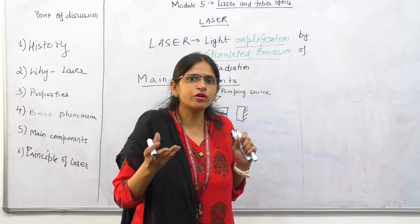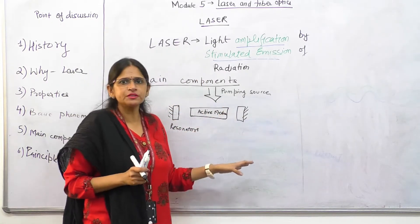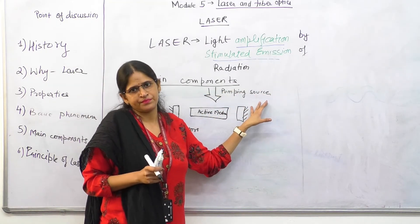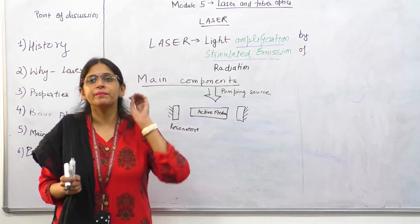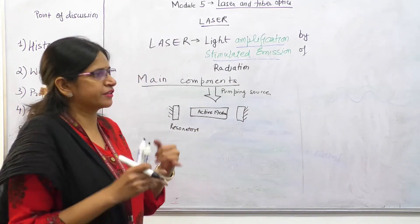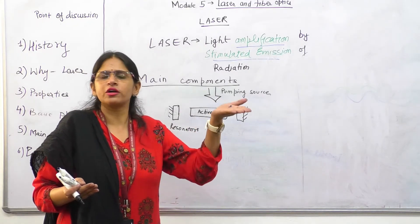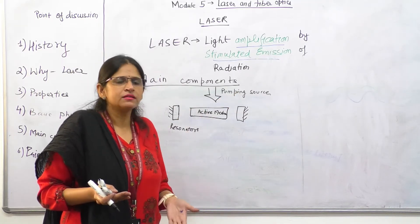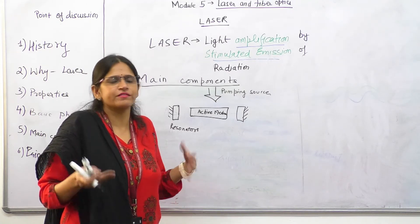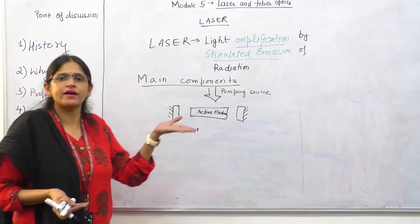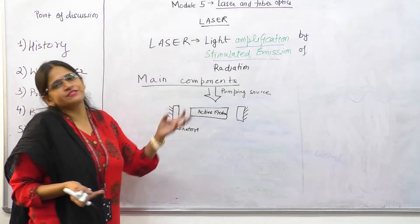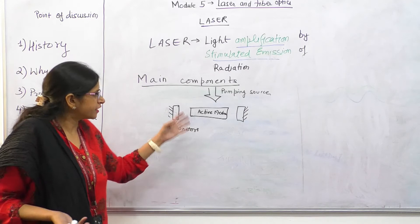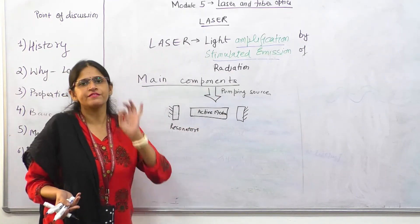And for stimulated emission what is required? Absorption. And which process gives that absorption? Which process gives that number of atoms should be there in the higher energy state? That is that pumping source. Therefore these three are the main components. The pumping source, if there will be no pumping source, no absorption, the number of atoms will not move to the higher energy level state. If the number of atoms will not move to the higher energy level state, then you cannot have the process of stimulated emission, not even spontaneous. But in laser we need stimulated emission. So we need the number of atoms to the higher energy level state. And if you are not taking active medium, then you don't know which laser you are fabricating. Therefore all these three components are very very important.